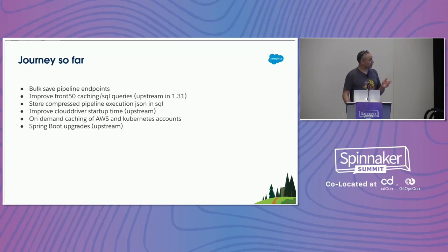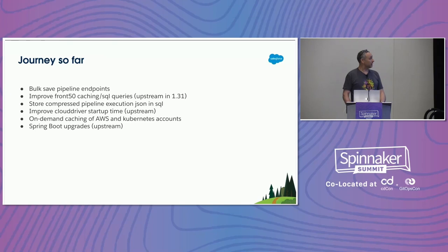The ones marked upstream have gone upstream. The out-of-the-box endpoints for saving pipelines only let you save one at a time, but with as many pipelines as we have and as often as they change, we needed to do a bunch at once, so we did that. Front50 is the repository for things like pipeline configuration, applications, and all those things we listed that we have lots of — they all live in Front50.